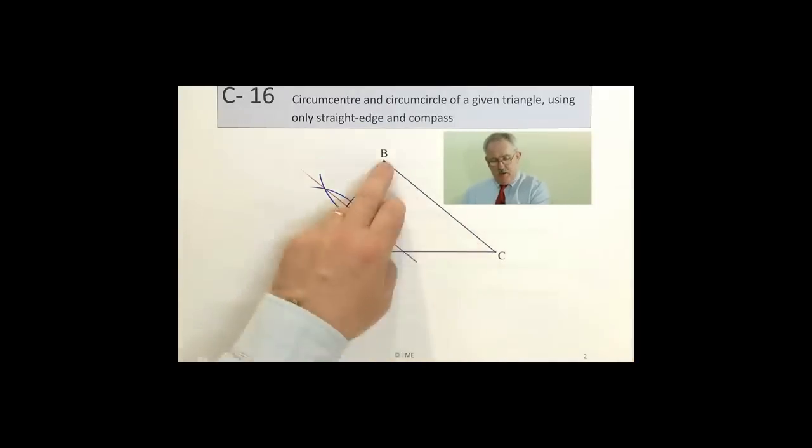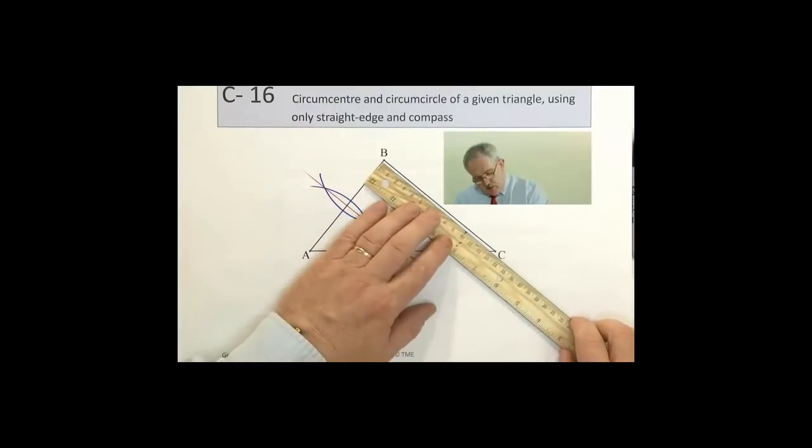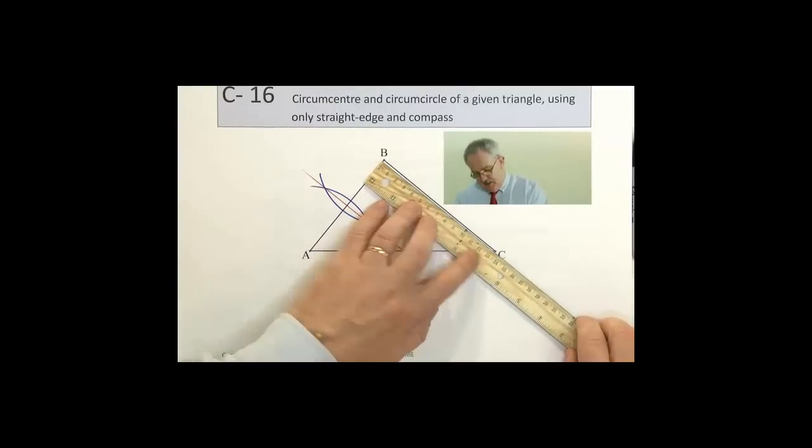Now I'm going to do the same here on the line BC. I look at BC. It's a longer length. It's 13.5 or something.